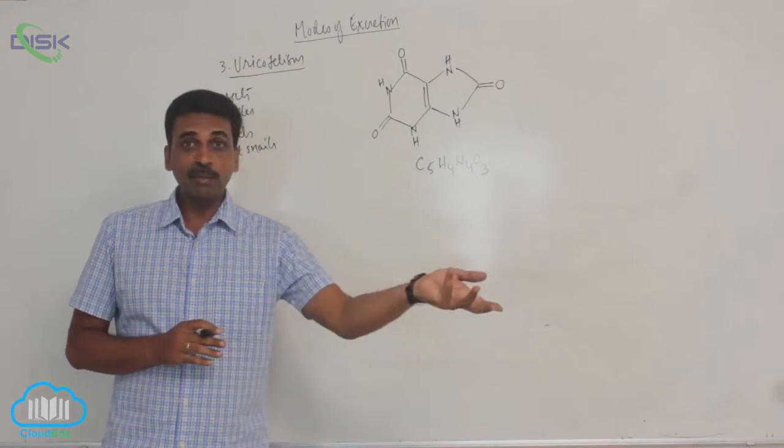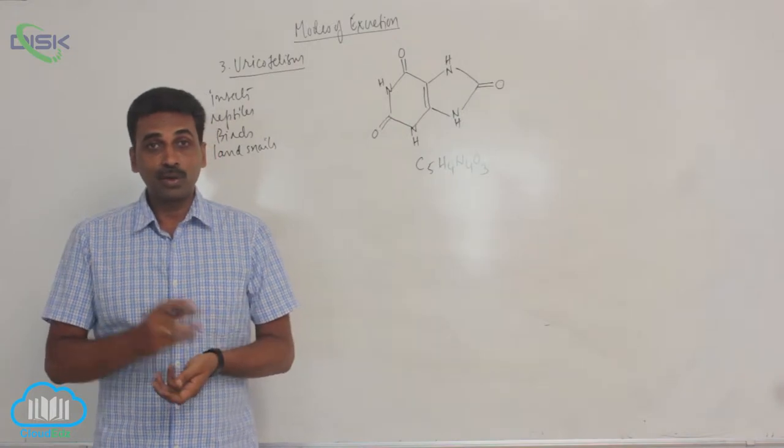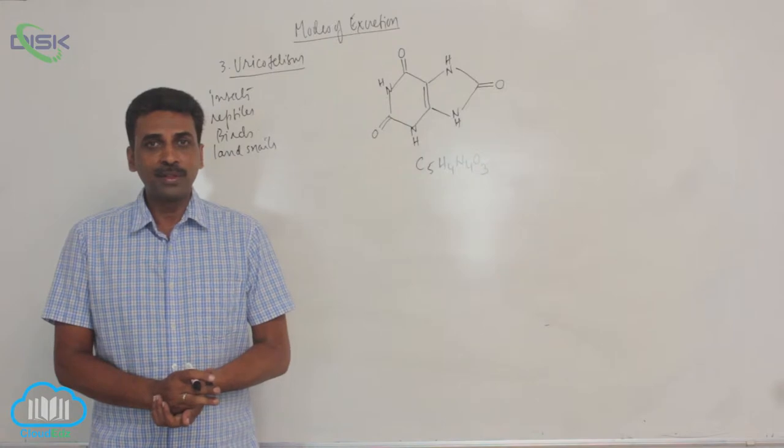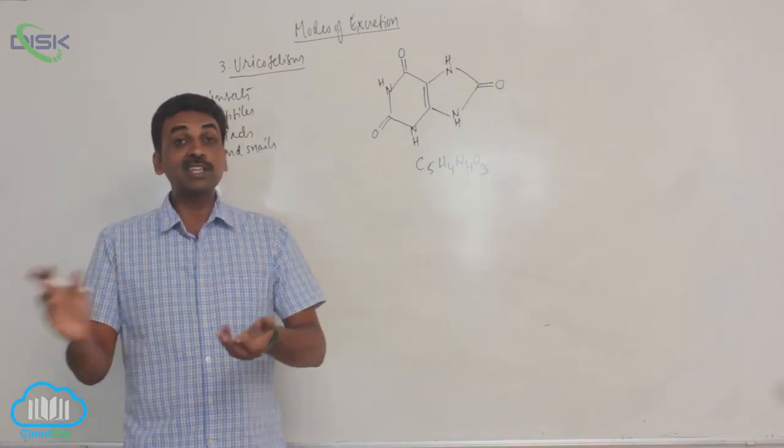When water is abundant some animals excrete ammonia or urea. Crocodile when water is abundant it will produce ammonia or urea. When it has come out of land in summer it is excreting uric acid.